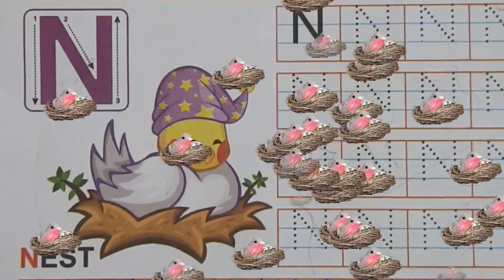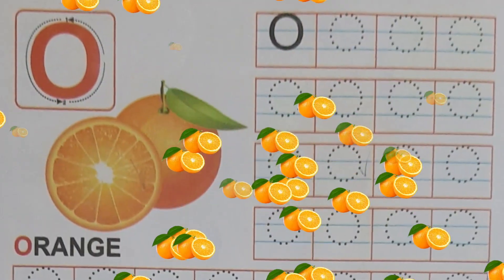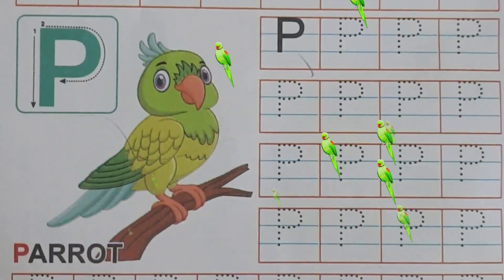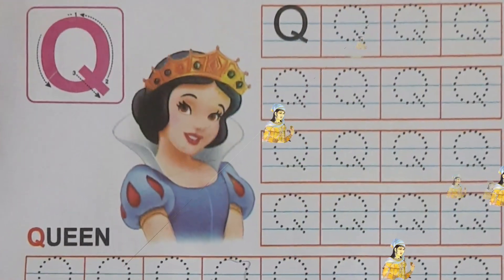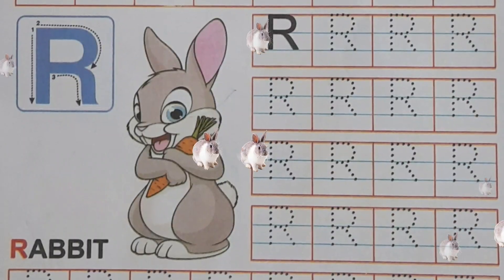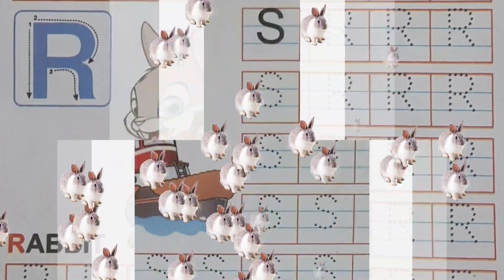N for Nest, O for Orange, P for Parrot, Q for Queen, R for Rabbit.